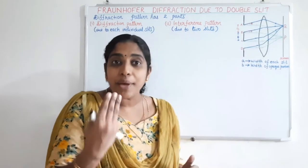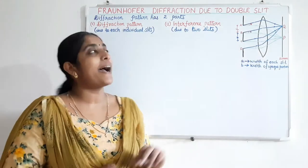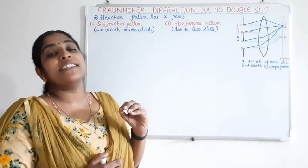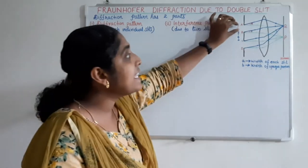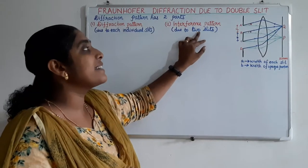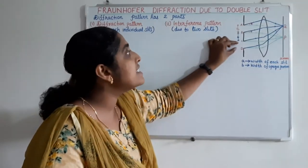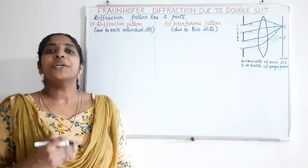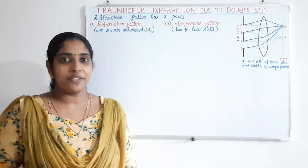This is similar to what we have seen in Young's double slit experiment. So the diffraction pattern here has two parts: one is the diffraction pattern due to secondary wavelets from each individual slit, and the second is the interference pattern due to secondary wavelets from the two slits reaching point Q. Now we can separately analyze these two.